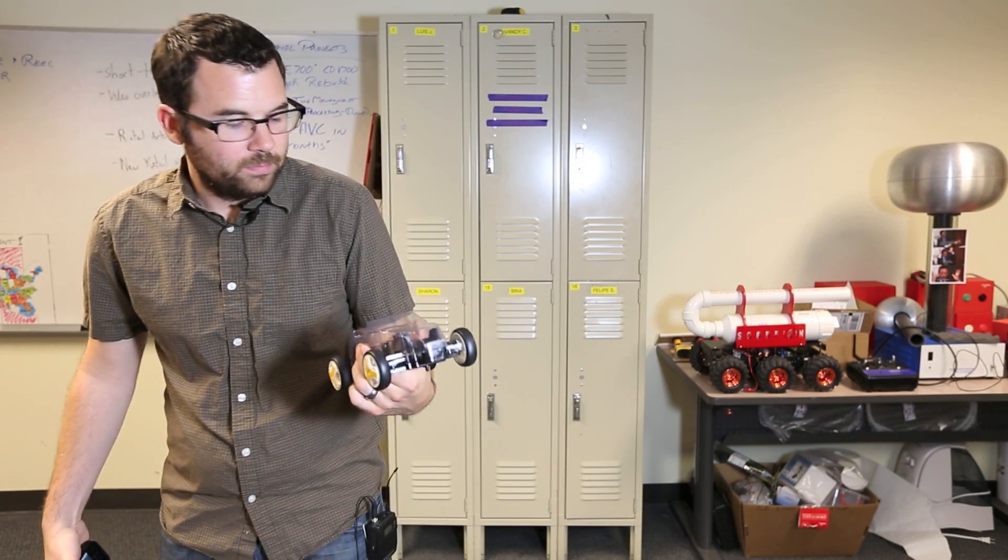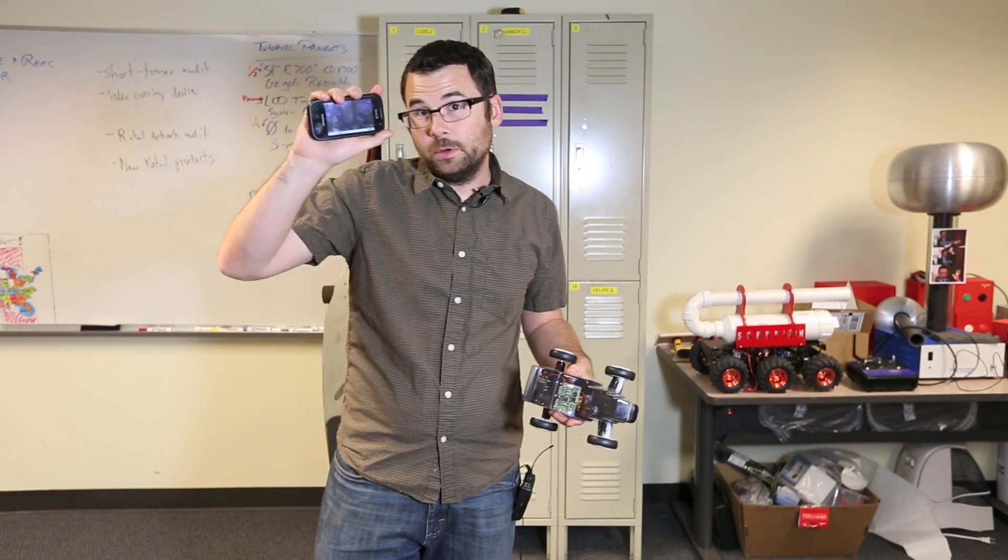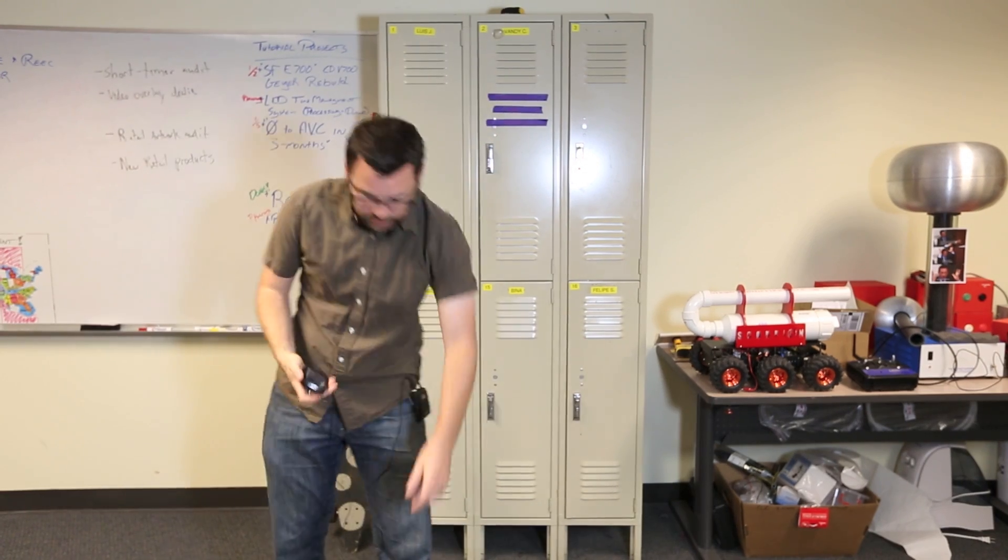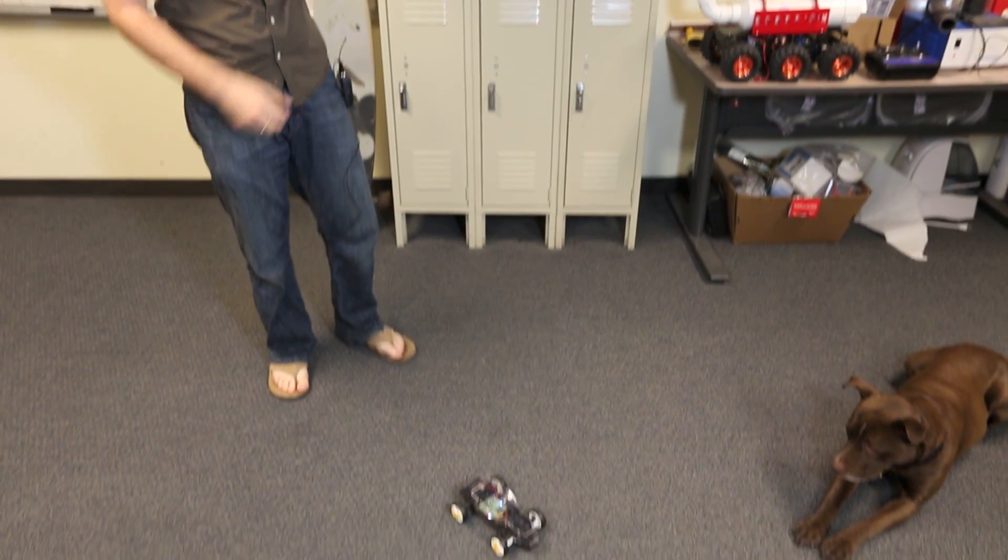So here we've got the iRacer. We've got it turned on, as you might be able to see. We've got it paired with an Android phone. We're running the Dagu Android app. And all we have to do is set it down, hit the button, and she drives.